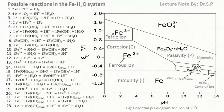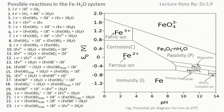In the figure, we can see there is a relatively large immunity region where corrosion products are solid and possibly protective, indicating that iron may corrode much less under these potential or pH conditions.